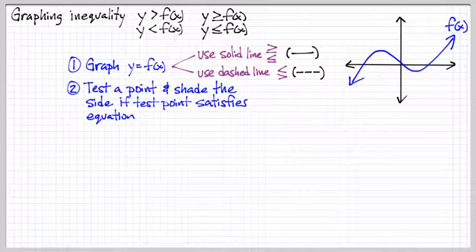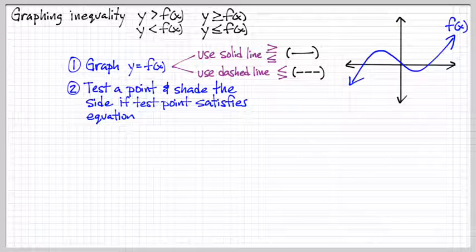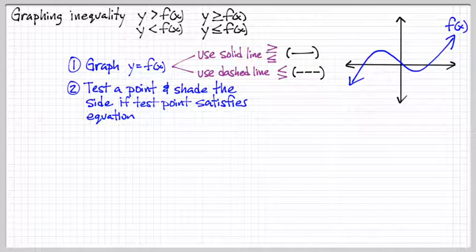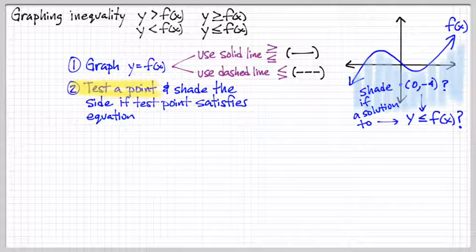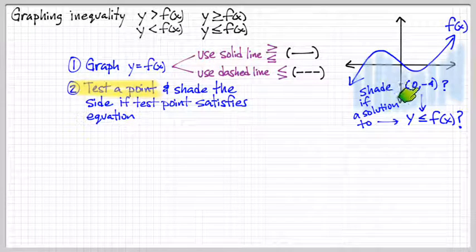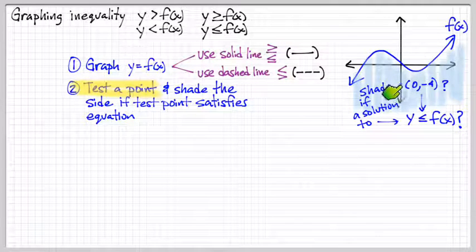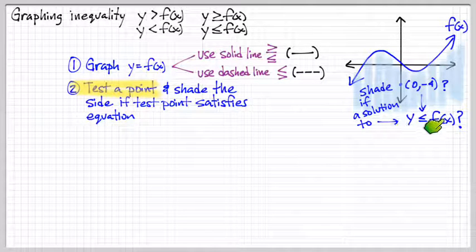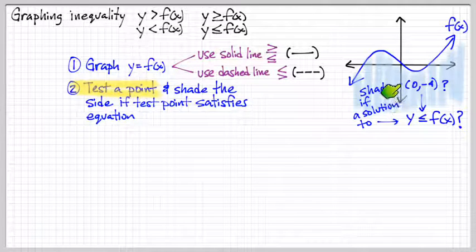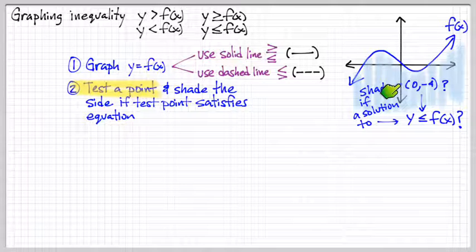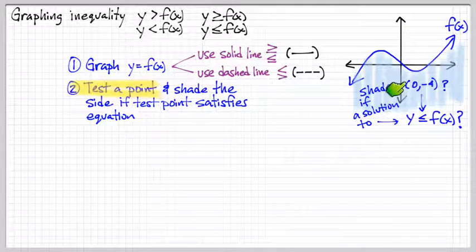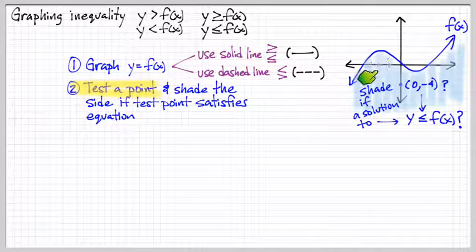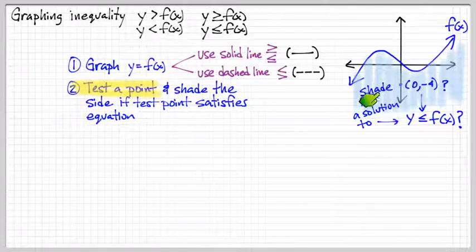So, then after we've graphed out f of x, we can take any point on either side of the curve and use it as a test point. We then test that point, we plug it into the inequality, and if this expression is true after plugging in the test point, that means that this point is part of the solution space. And so, in fact, everything on that same side of that test point would be part of the solution space. So, we shade everything there.